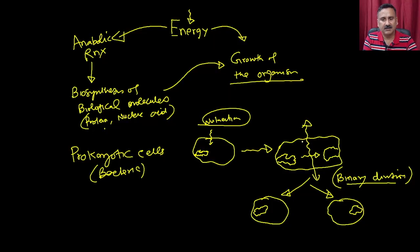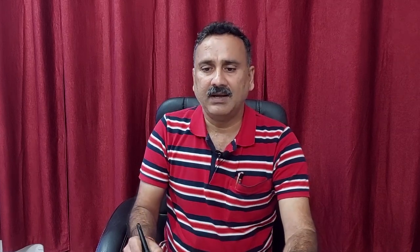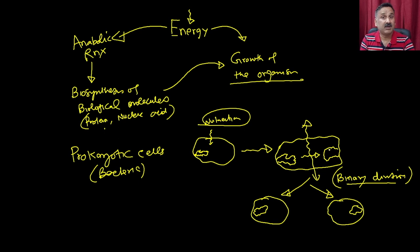In binary division, you simply cut the bacterium from the middle so that both cells have some cytosol and some nuclear content. Since prokaryotes do not have membrane-bound organelles, you do not have to worry about distributing organelles between the two daughter cells.